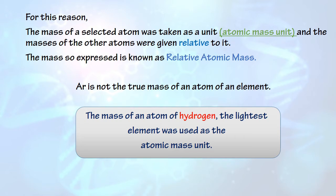The mass of an atom of hydrogen, the lightest element, was originally used as the atomic mass unit. Relative atomic mass tells you the number of times an average atom of a given element, from the sample, is heavier than the reference unit.